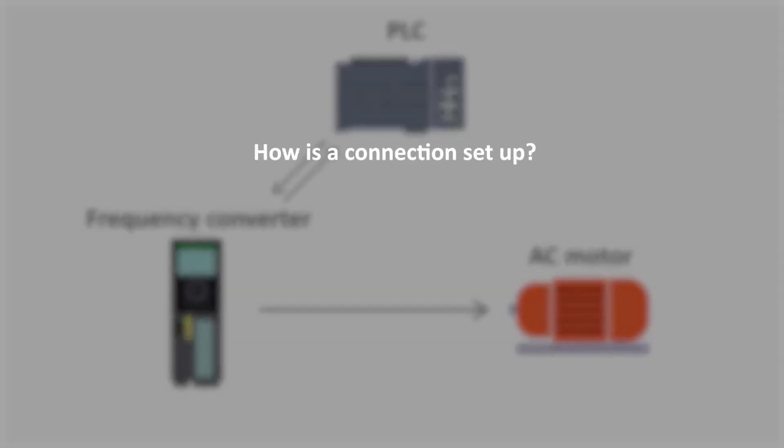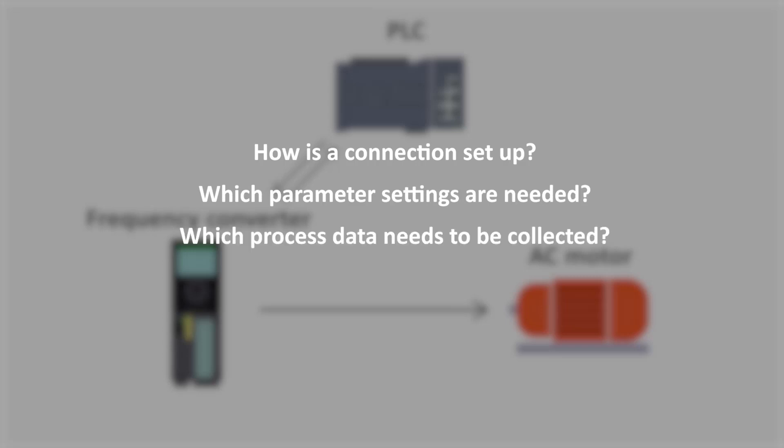How is a connection between the PLC and converter set up? Which parameter settings are needed? And which process data needs to be collected?